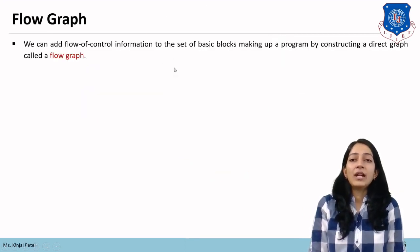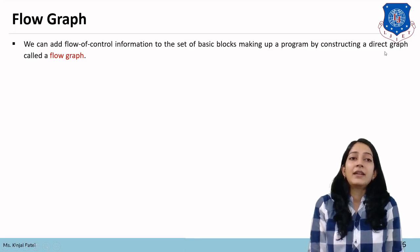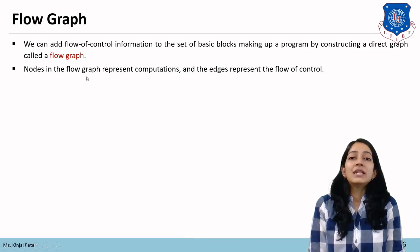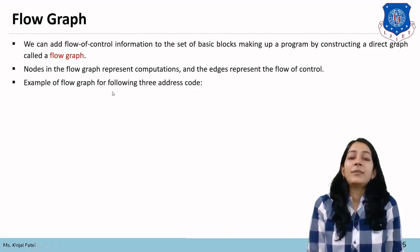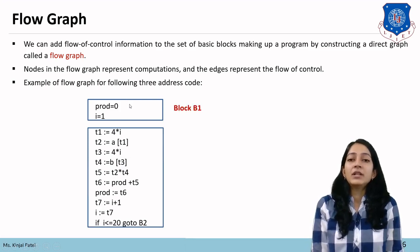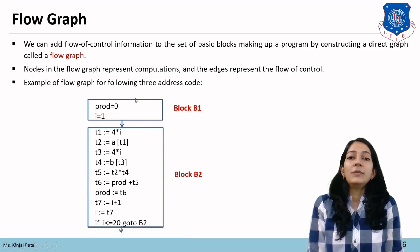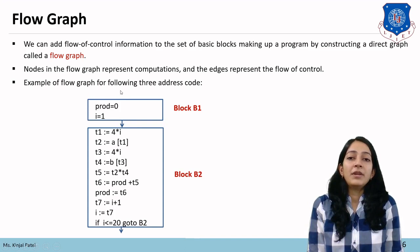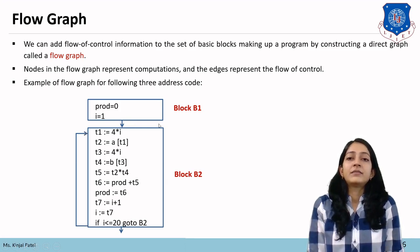The next topic is the flow graph. We can add flow of control information to the set of basic blocks making up a program by constructing a directed graph called a flow graph. Nodes in the flow graph represent computations and edges represent the flow of control. From block B1 we go toward block B2, so we assign a directed edge from B1 to B2. This is the flow graph of the three-address code.